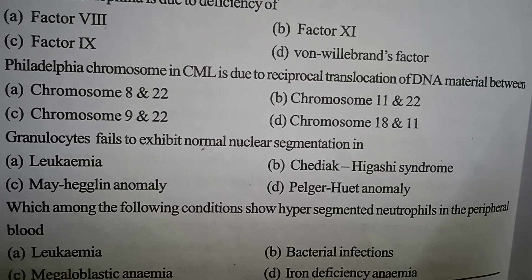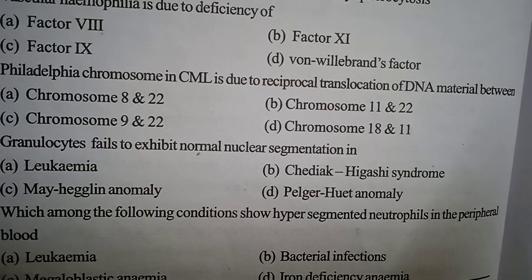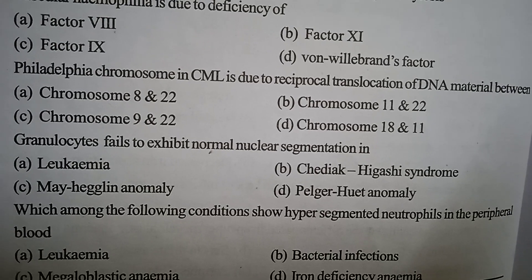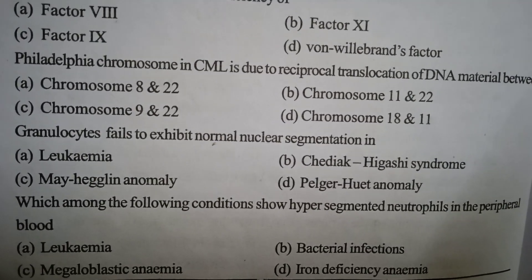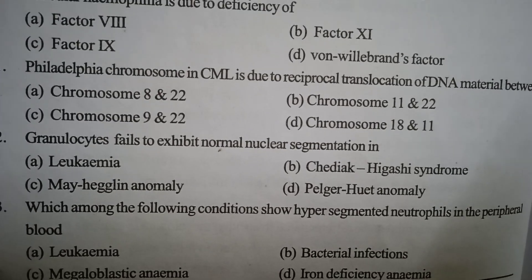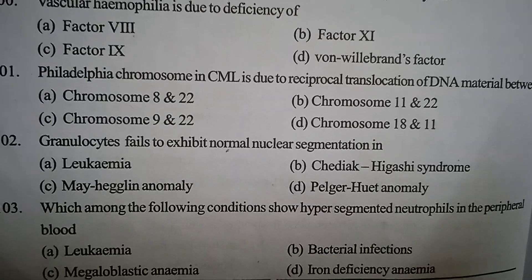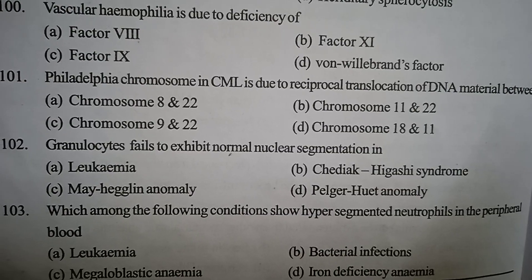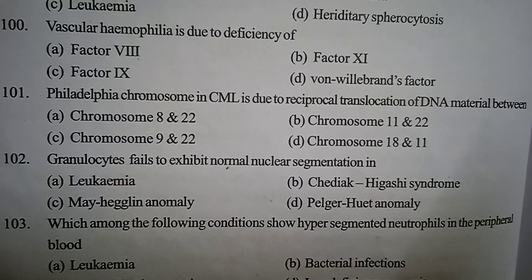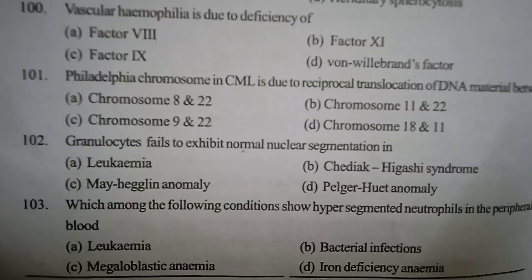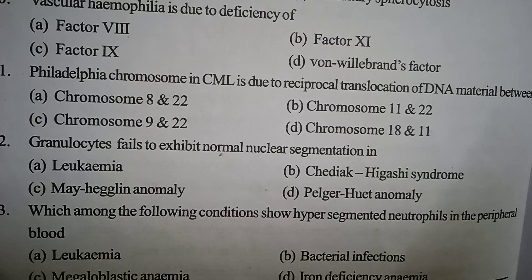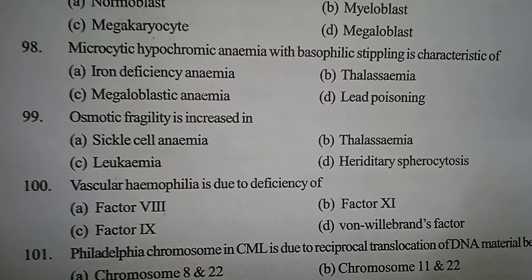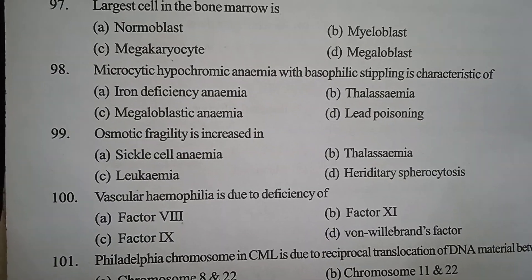Next one: which of the following conditions shows hypersegmented neutrophils in the peripheral blood? Option A: leukemia. Option B: bacterial infection. Option C: megaloblastic anemia. Option D: iron deficiency anemia. Correct answer: Option C, megaloblastic anemia — hypersegmented neutrophils are seen in the peripheral blood. If you like the video, please like, share and subscribe to my channel. Thank you.